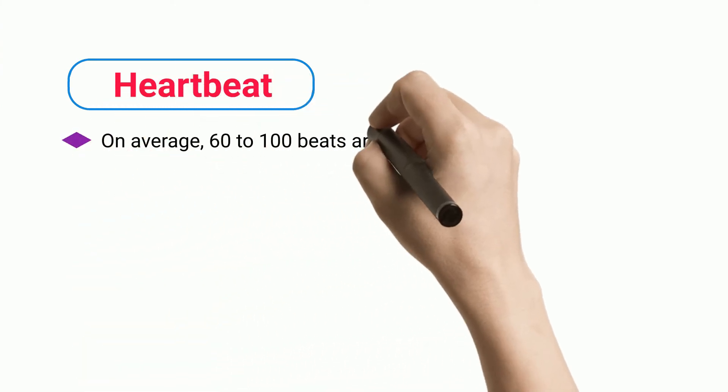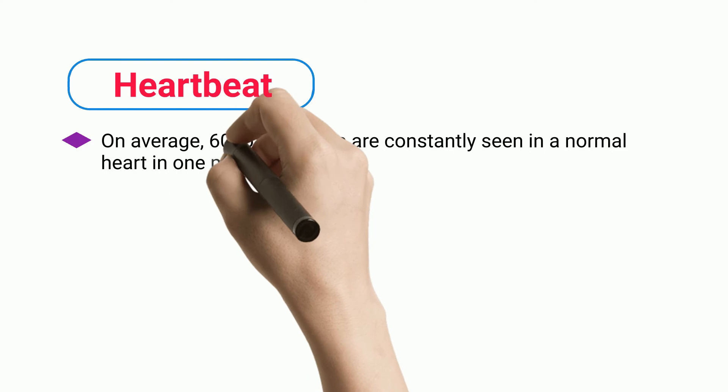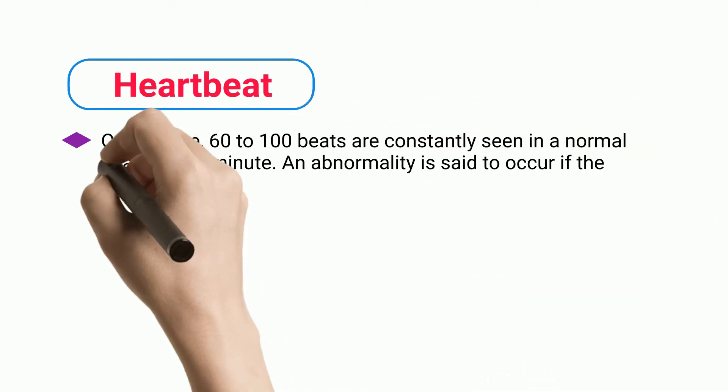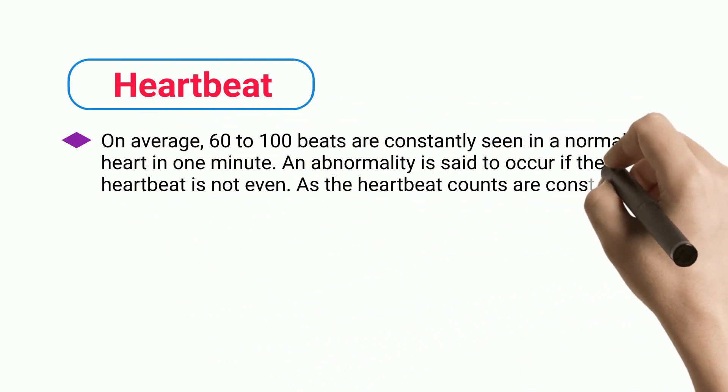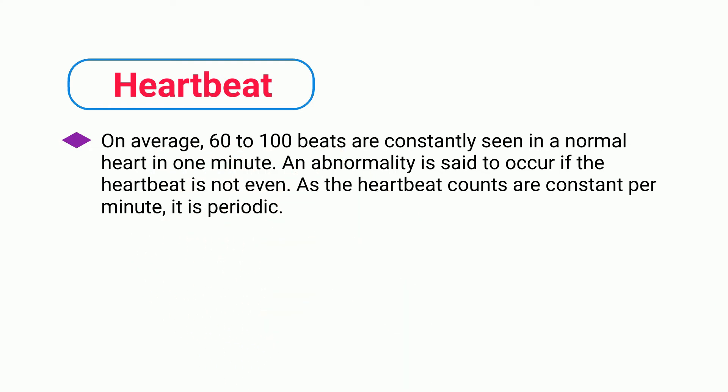Heartbeat: On average, 60 to 100 beats are constantly seen in a normal heart in one minute. An abnormality is said to occur if the heartbeat is not even. As the heartbeat counts are constant per minute, it is periodic.